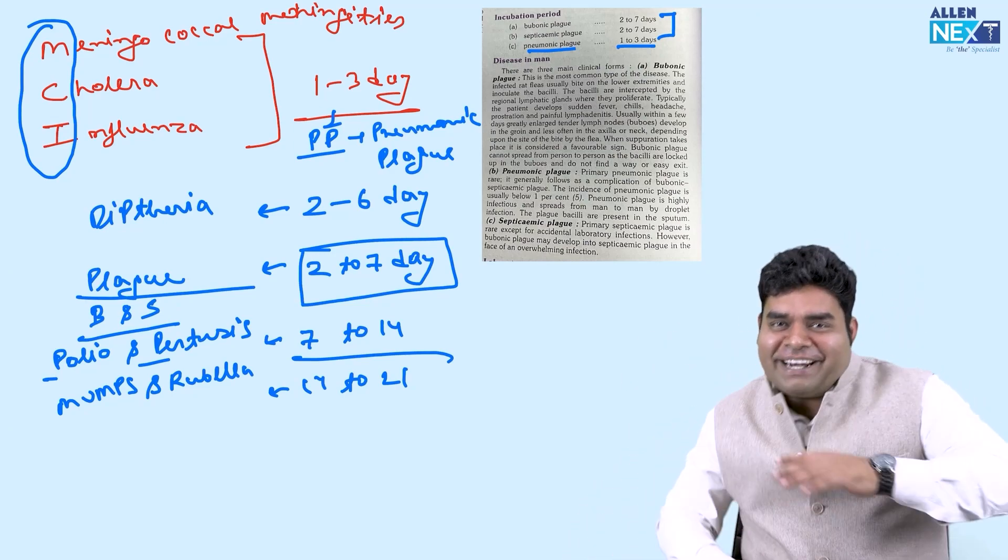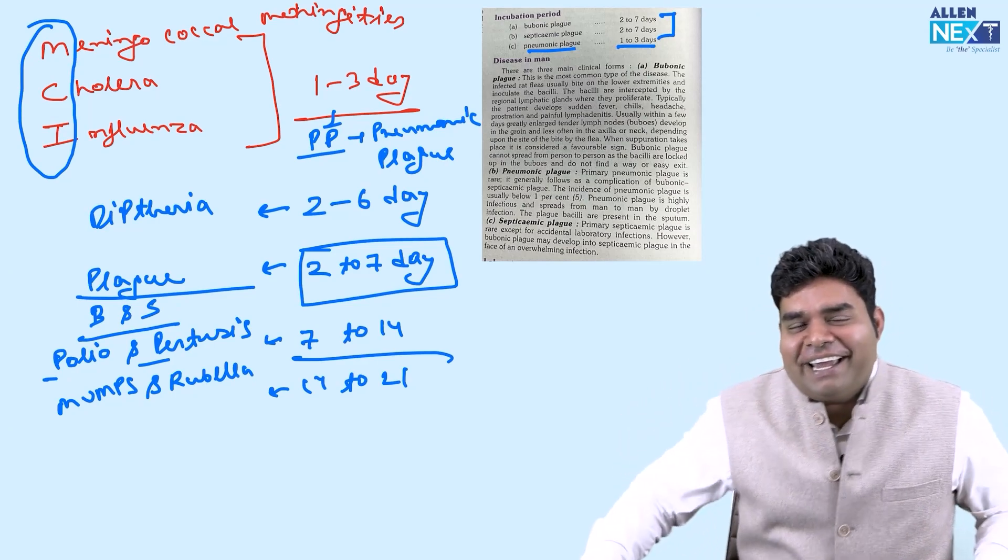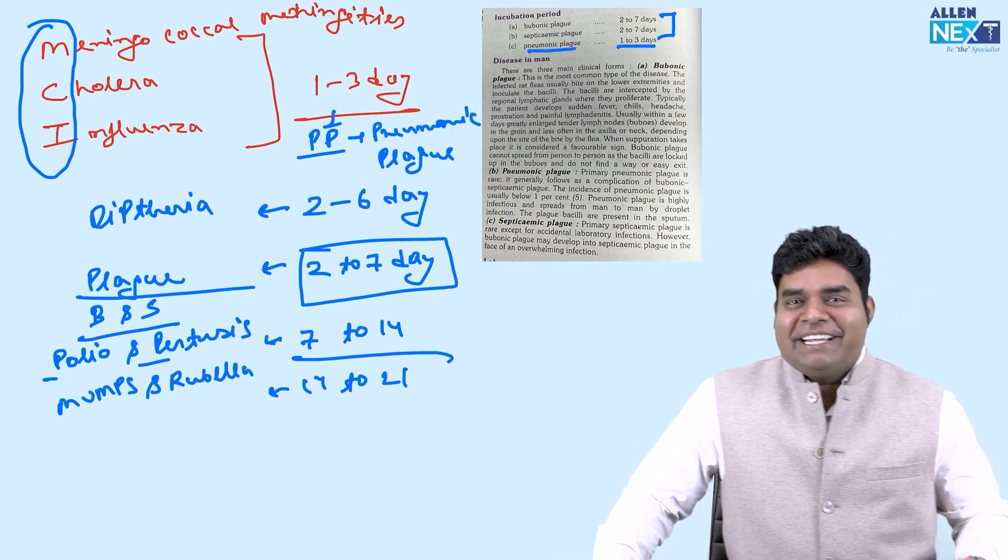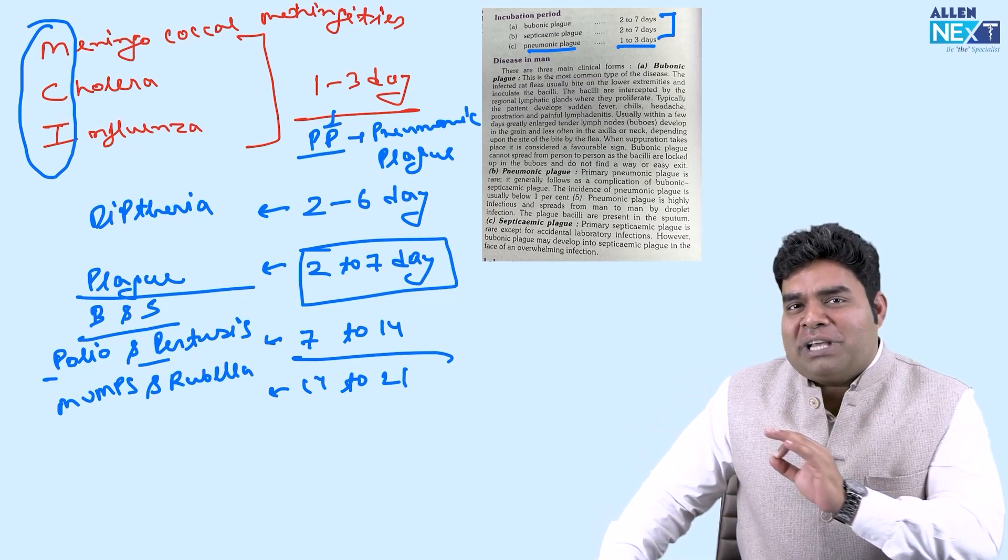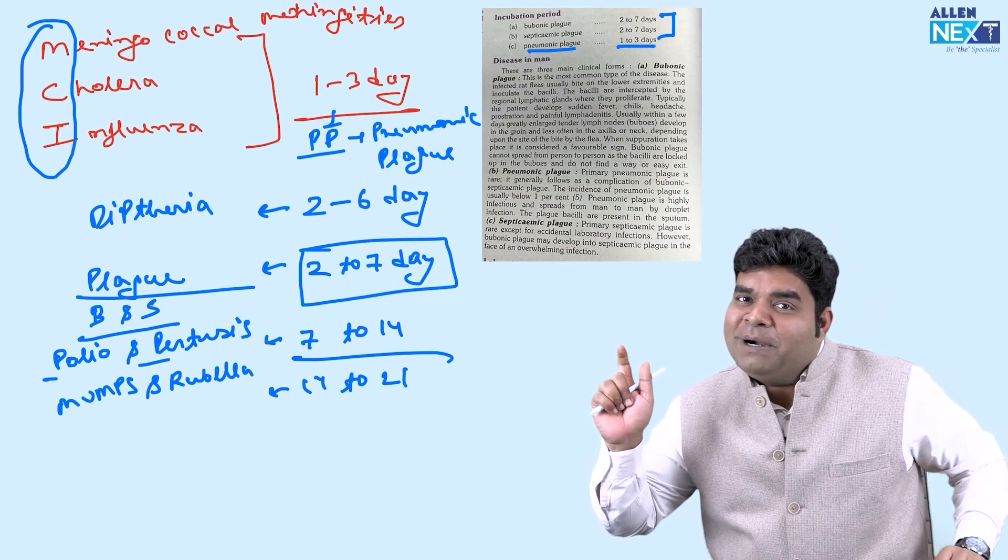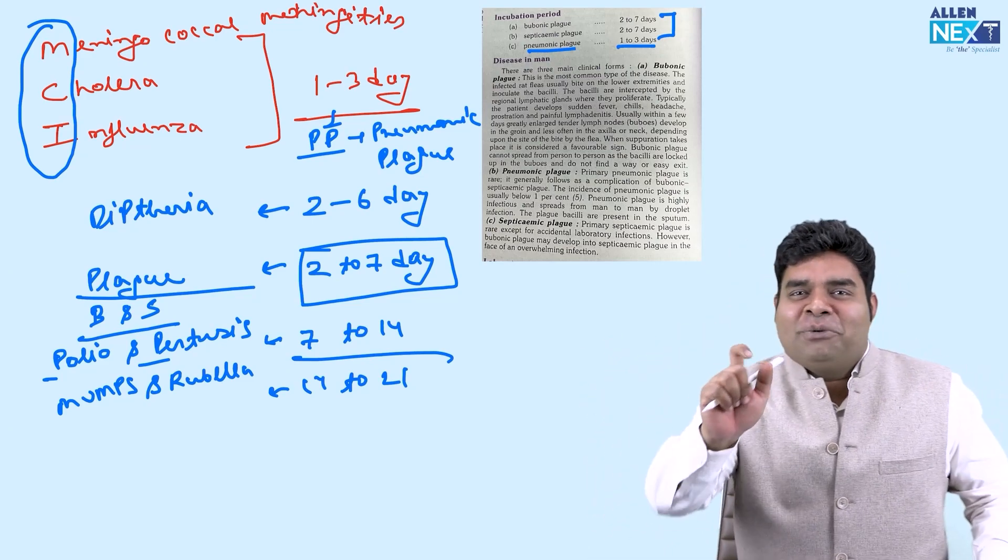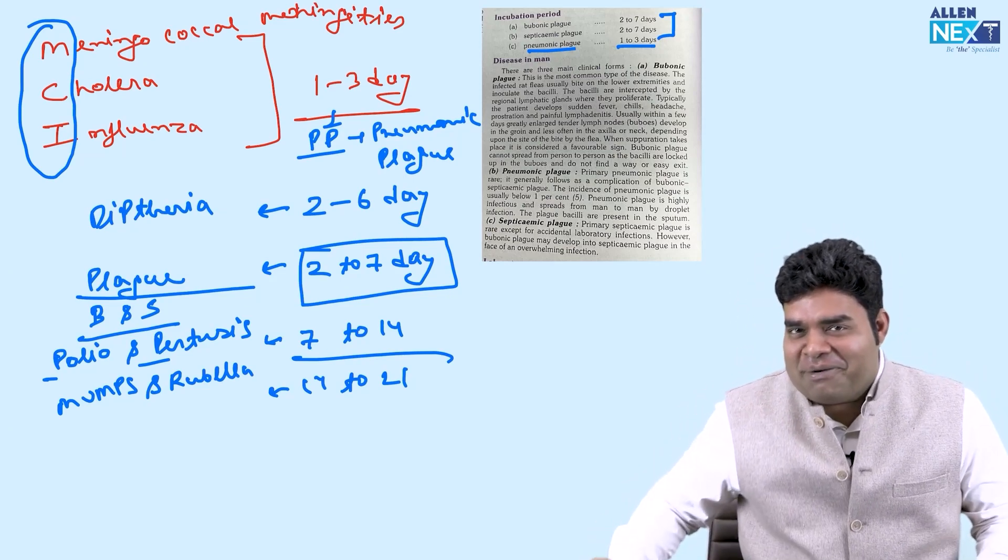It is like a flow, there is a flow there and you can remember it in the flow and you will not forget it. 1 to 3 MCI, 2 to 6 diphtheria, 2 to 7 plague, 7 to 14 polio pertussis, 14 to 21 mumps rubella. You all can remember it in the flow.